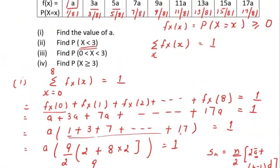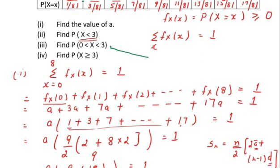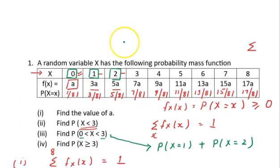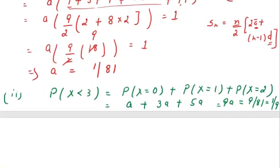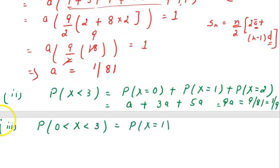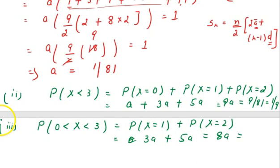The third part: find P(0 < X < 3). Here x is strictly between 0 and 3, excluding x = 0 and x = 3, so only x = 1 and x = 2 are included. P(0 < X < 3) = P(X=1) + P(X=2) = 3a + 5a = 8a. Since a = 1/81, this equals 8/81.